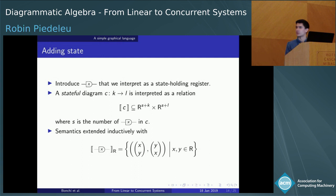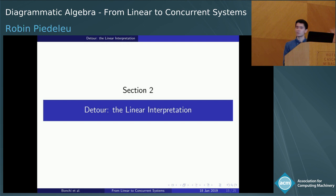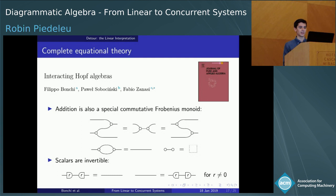This language has seen various users since its creation, but it was originally created to model linear dynamical systems, and that's still the better-understood interpretation. Over a field K, the language captures precisely the category of linear relations — relations that are closed under K-linear combinations. The semantics was given a complete axiomatization in the work of Filippo, Pavel, and Fabio, called Interacting Hopf Algebras. With all the equations given so far, plus those on this slide, you get a complete equational theory for linear relations.